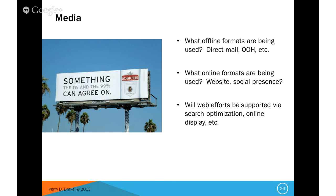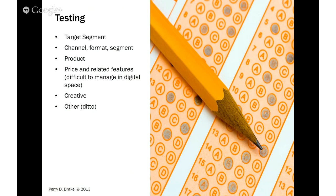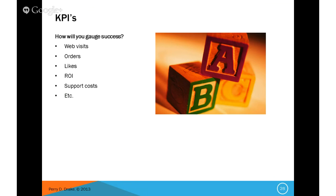Media: decide what offline formats and online formats you want to use. Testing is very important — test, test, test. In the digital world, it is so easy to test. There's no reason to make mistakes or to guess. You can test with a relatively small budget, unlike the old offline world where a promotional or product or price change required new creative, lettershop, postage, production, and printing — with time delays of up to six months before you could get a read. Today, that's definitely not the case, and there's no excuse not to have a good testing strategy.